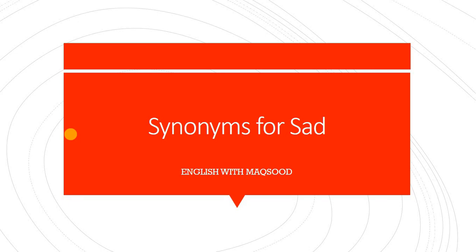Everyone may know the word 'sad' and its meaning. Said ka matlab sabko pata hoga — sad means udaas. Sad is the opposite of happy. I have also done a lecture on the word 'happy' with synonyms. If you want to learn synonyms of happy, I have given the link in the description box. You can watch that lecture too.